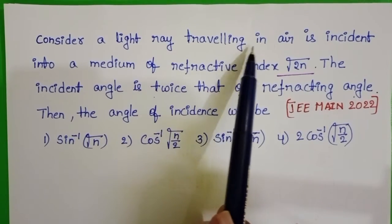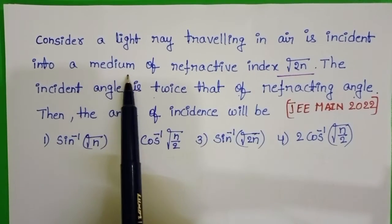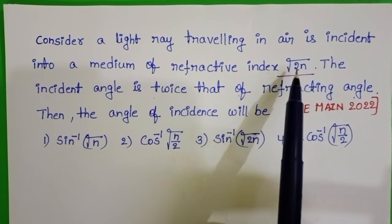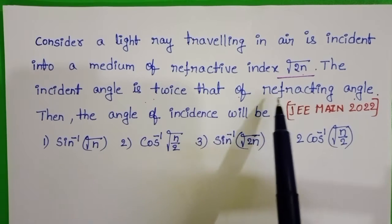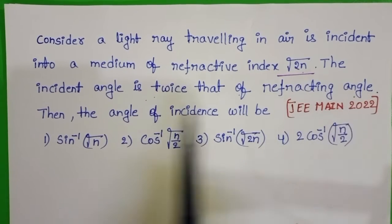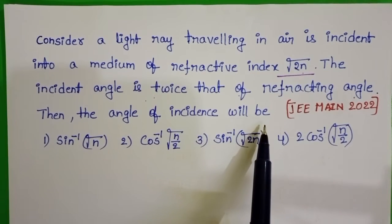Consider a light ray travelling in air is incident into a medium of refractive index √(2n). The incident angle is twice that of the refracting angle. Find the angle of incidence.